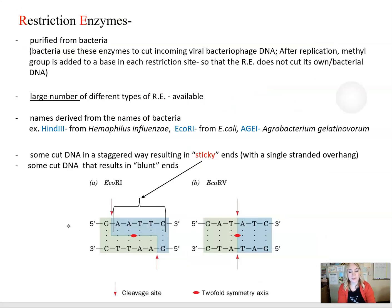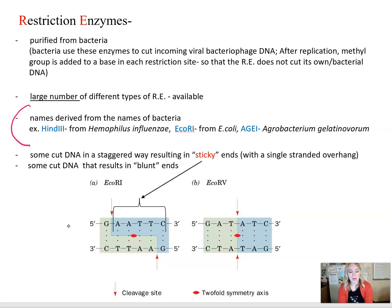Where do we actually get these restriction enzymes from? They are purified from bacteria, and bacteria typically use these restriction enzymes as their immune system. When bacteriophages inject viral DNA, the restriction enzymes are going to recognize the DNA as foreign and cut it up, neutralizing the viral effect on bacteria. There are a large number of restriction enzymes that we already have, and the way we assign the names is based on which bacteria the restriction enzyme was purified from. For example, HIND3, which uses Roman numerals, comes from Haemophilus influenzae bacteria.